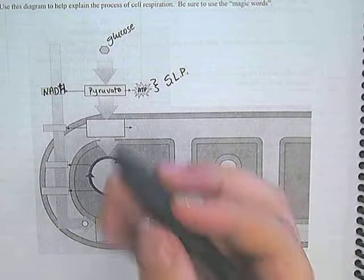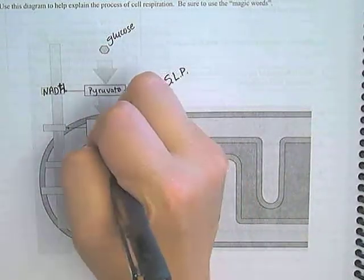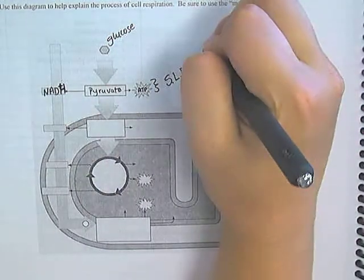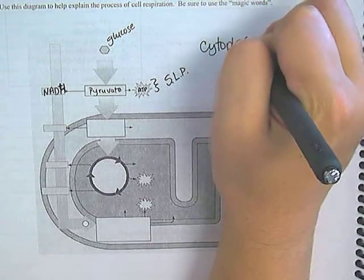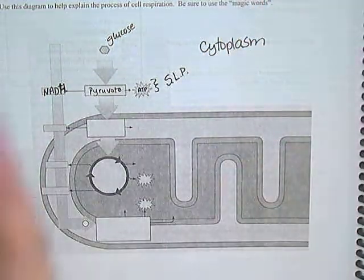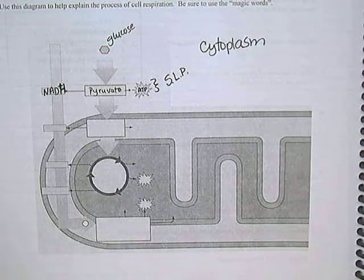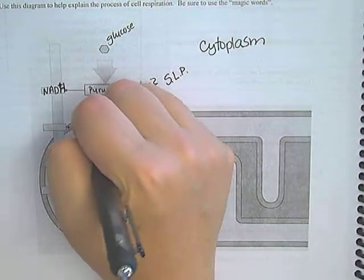That pyruvate is then going to enter into the mitochondria. All of this is going out here in the cytoplasm, proof or evidence that LUCA used the process of glycolysis.